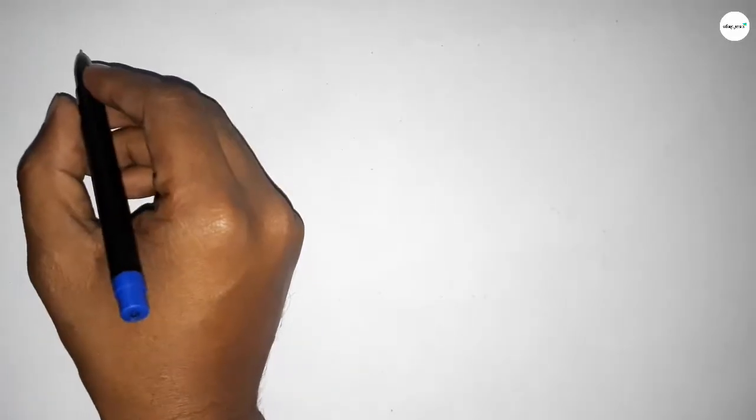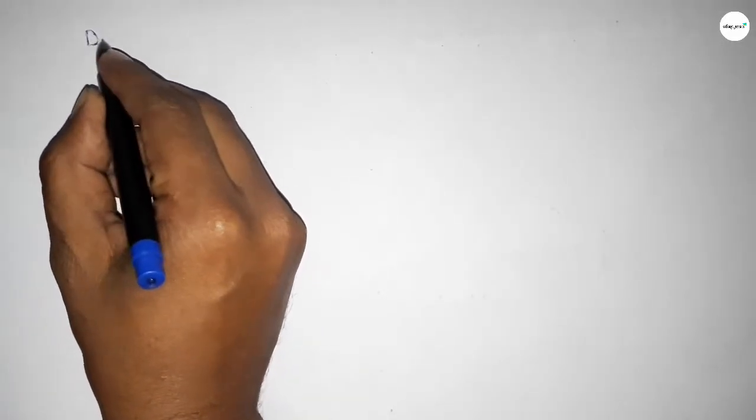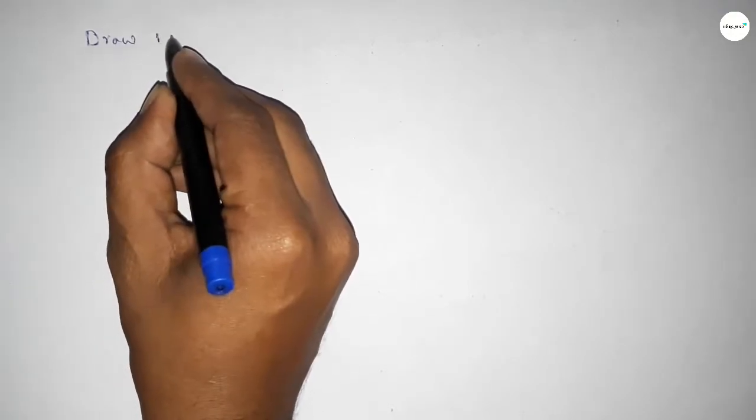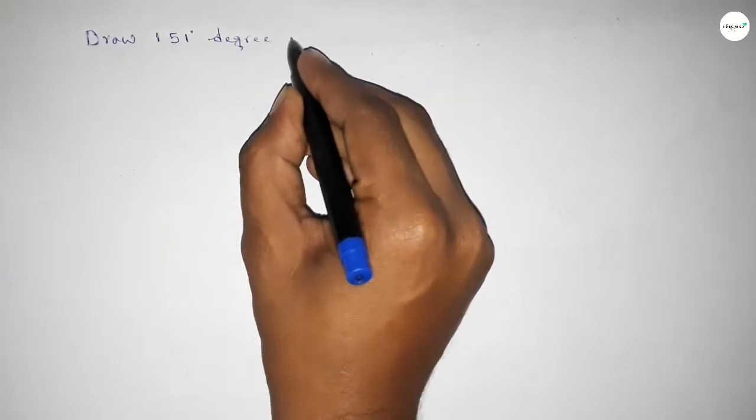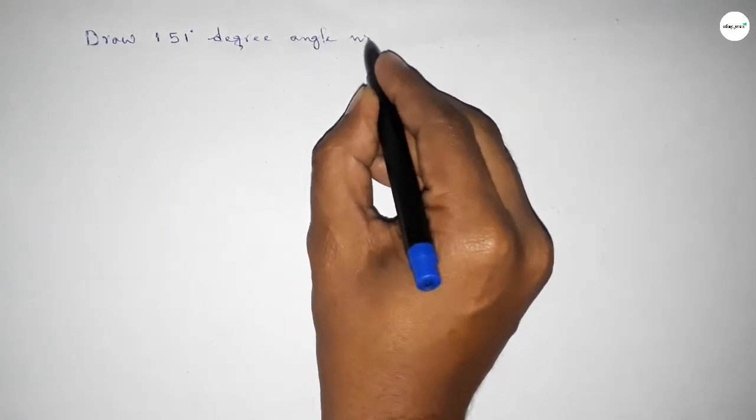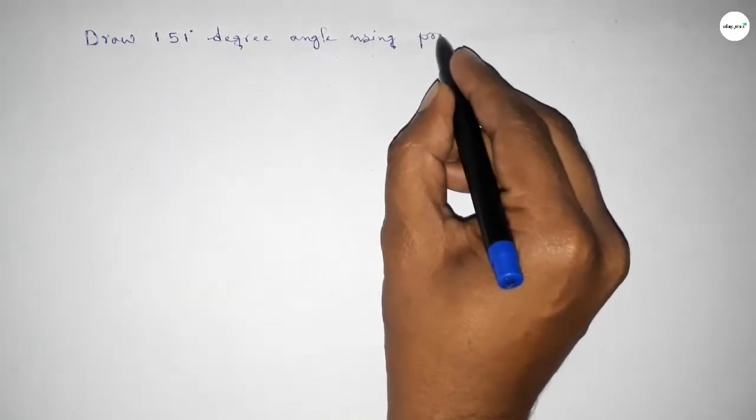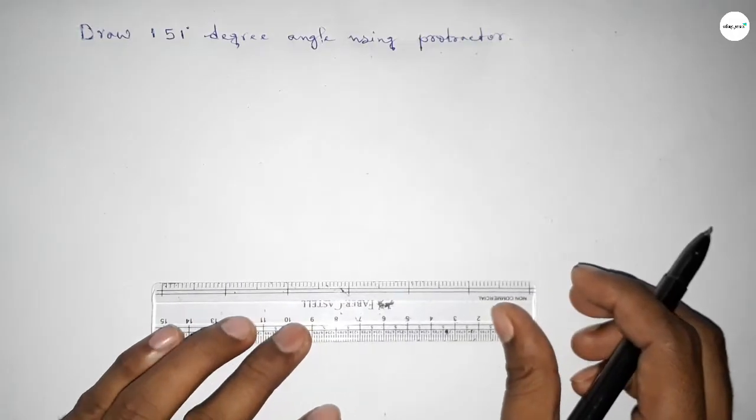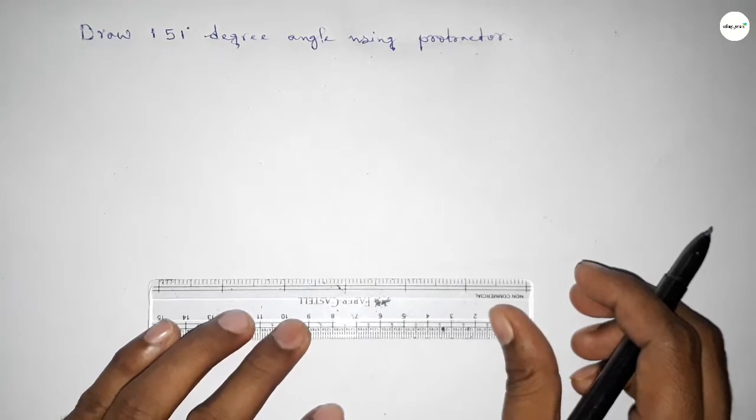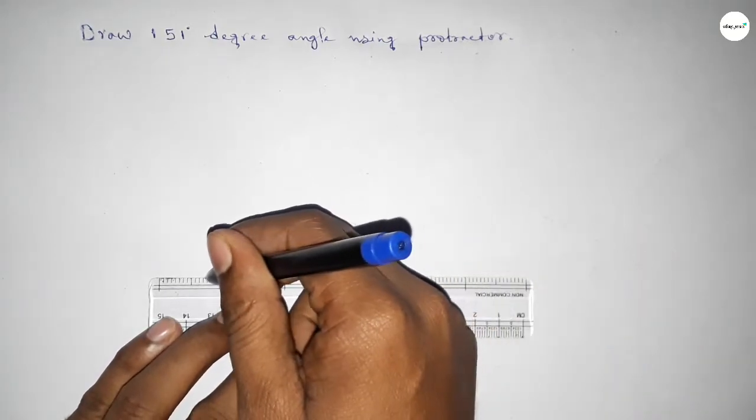Hi everyone, welcome to SSR Classes. Today in this video, we have to draw a 151 degree angle by using a protractor. So let's start the video. First of all, we have to draw here a straight line of any length.